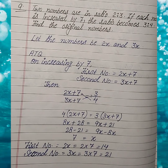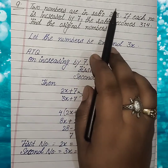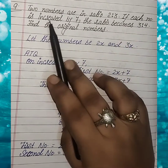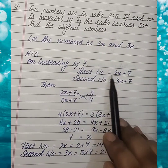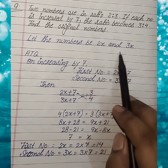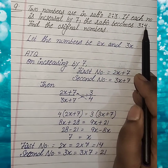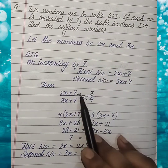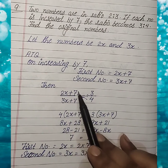Now question number 9. Two numbers are in ratio 2:3. So suppose the numbers are 2X and 3X — these are the original numbers. If each number is increased by 7, then the first number becomes 2X+7 and the second becomes 3X+7. The ratio then becomes 3:4. So when we add 7 to both numbers, the ratio becomes 3 upon 4, meaning 2X+7 upon 3X+7 equal to 3 upon 4.